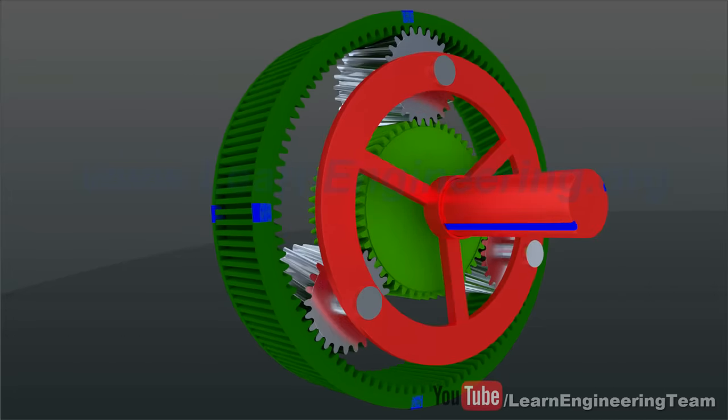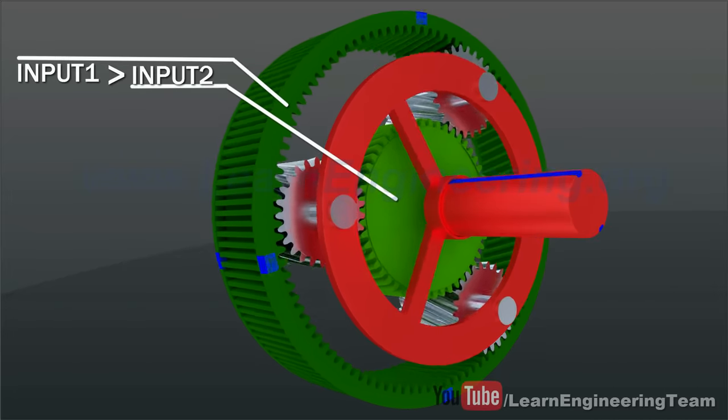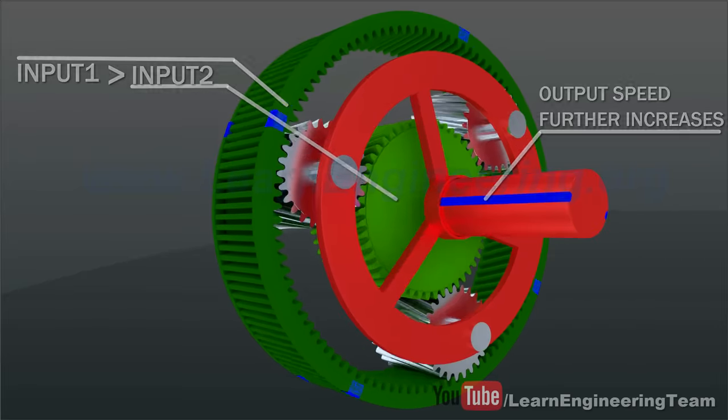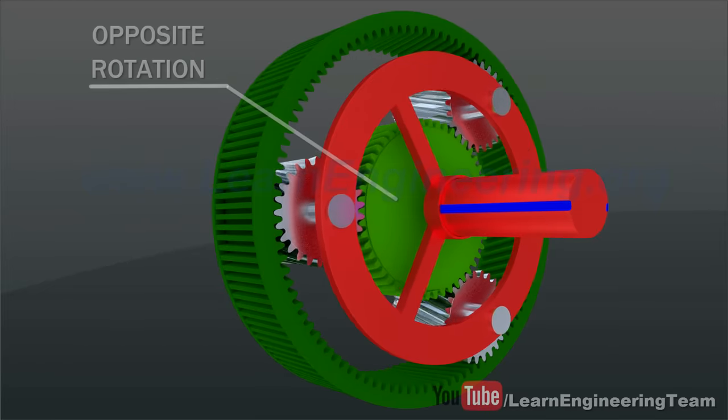The ring gear speed is increased further. Turning the sun gear in the opposite direction will result in a reverse gear.